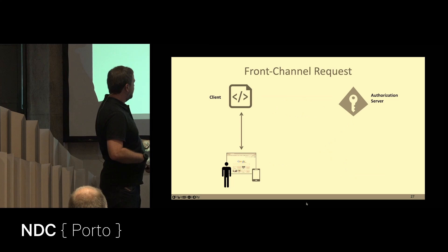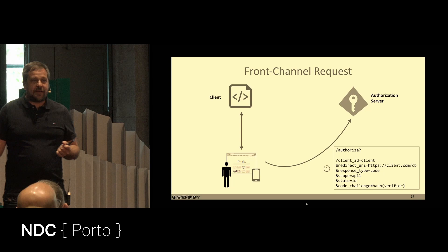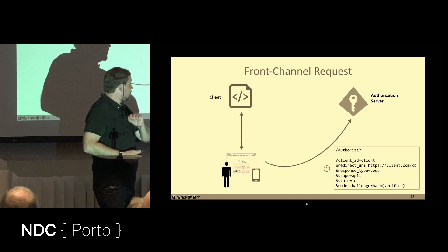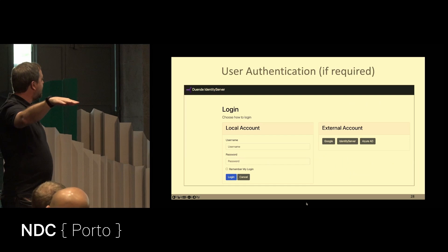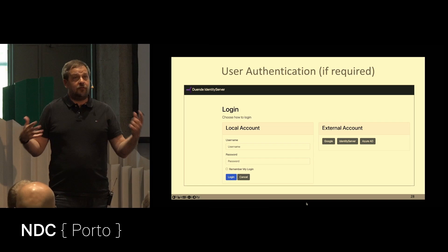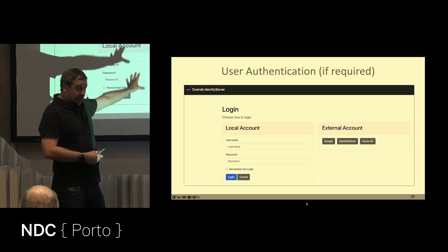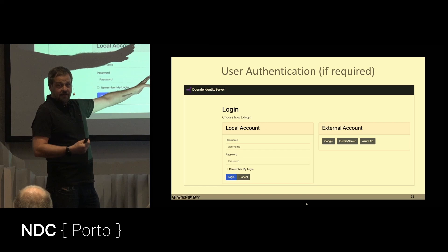How does the front channel request look? It's a redirect to the authorization endpoint with parameters: client ID, redirect URI, response type set to 'code', and scope — for example, API1. A whole bunch of stuff kicks off in the browser. Probably the first thing you see is a login screen, if you are not inside an existing single sign-on session. You log in — username and password or whatever. That login screen is running on the authorization server, meaning the same entity that owns the resources, which is why it's trusted.